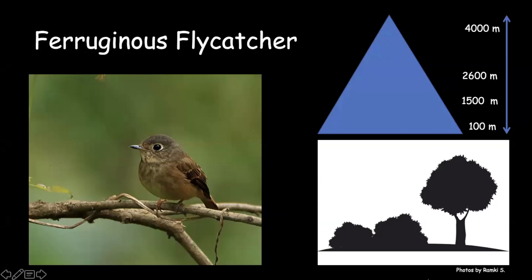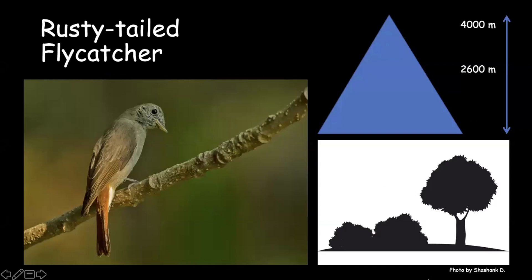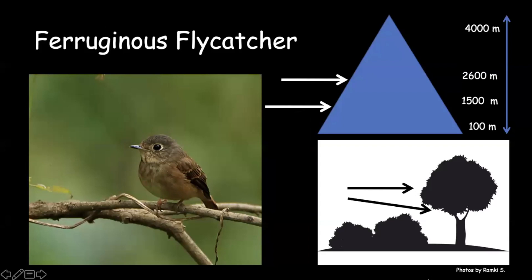Ferruginous flycatchers turn up in northeast India only in the summer months, found mainly at mid-elevation around 1,500 to 1,600 meters. You'll always see them sitting on the lower part of trees or around bushes, hawking insects maybe only four or five feet away — compared to something like the sooty flycatcher which goes long distances to catch prey. These minute behavioral differences can help identify some flycatchers.